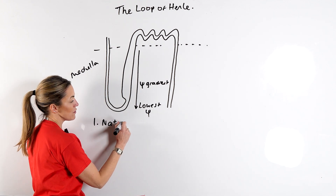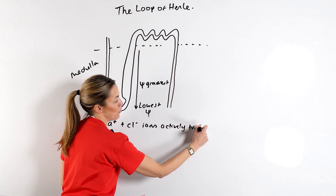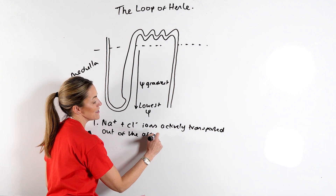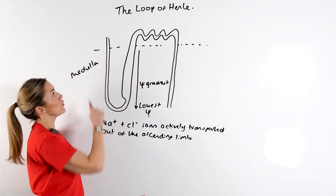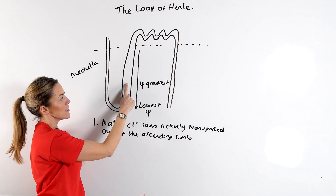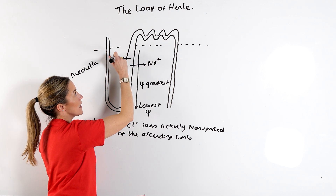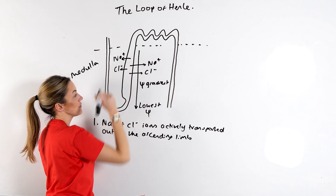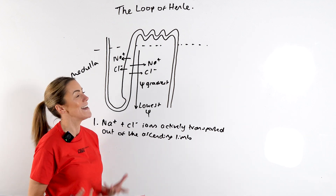We have sodium and chloride ions actively transported out of the ascending limb. The filtrate is coming from the PCT, going down the descending limb and then up the ascending limb. So we're going to see the active transport of sodium and chloride ions out of the ascending limb. This is active transport, so it obviously requires ATP.